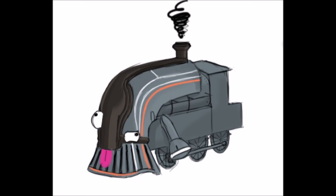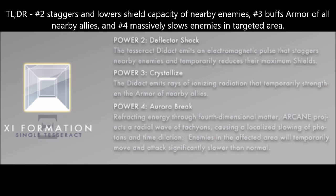Arcane's third ability set is Xi. Xi is Arcane's supportive ability set. Xi comes with 3 powers: Deflector Shock, Crystallize, and Aurora Break. Deflector Shock staggers and reduces the shield capacity of nearby enemies, Crystallize temporarily increases the armor of nearby allies, and Aurora Break massively slows enemies in a targeted area.